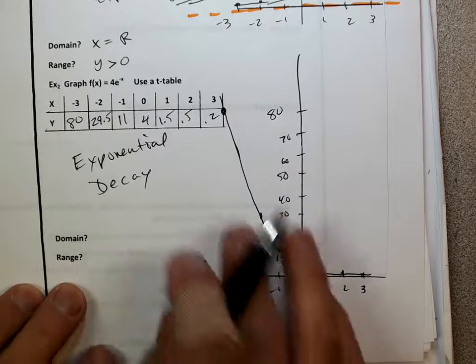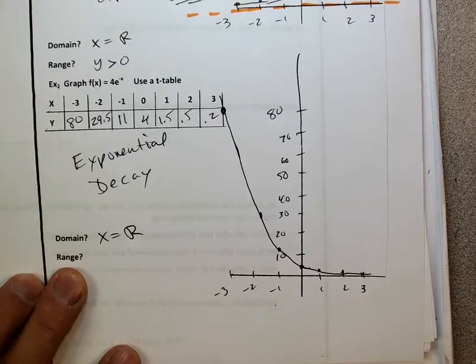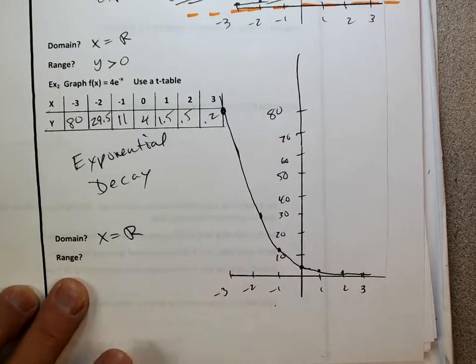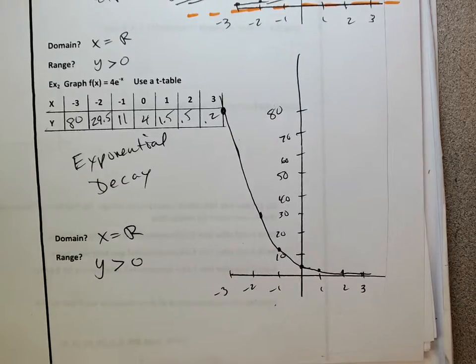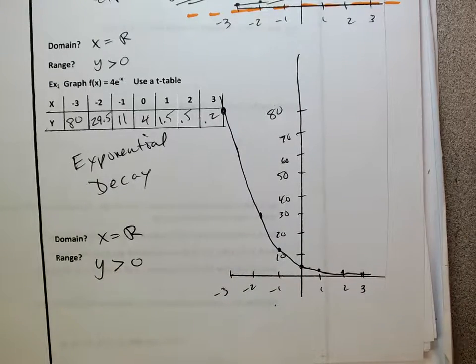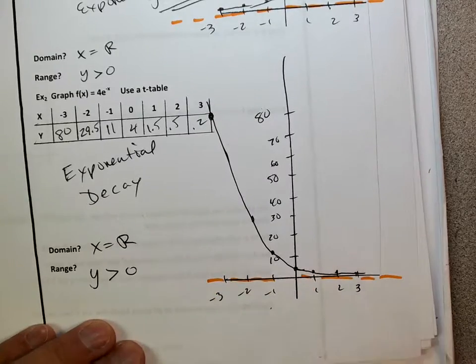Okay, domain. What do you guys think about the domain? Yep. Jose is right. You guys agree with all real numbers? Yeah. Right. Range. What's range going to be? Y. Zero. Totally agree. And we can draw in the horizontal asymptote if we want to. There's the horizontal asymptote. All right. Not too bad. Here you turn the page.